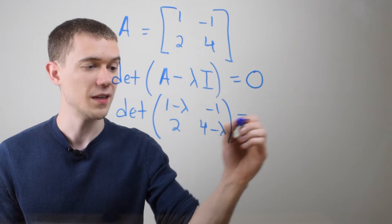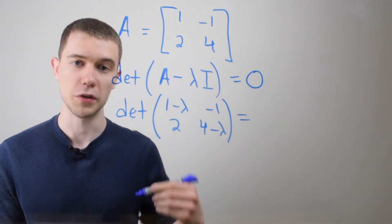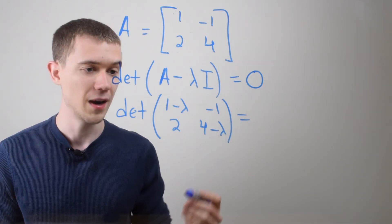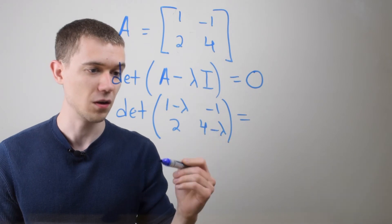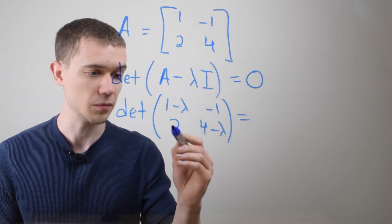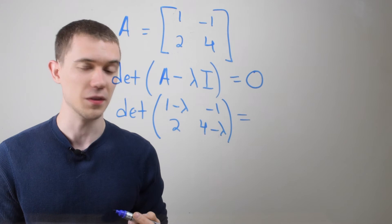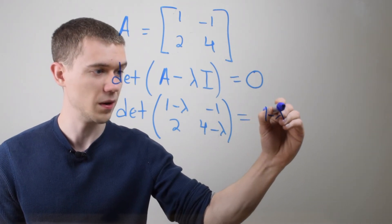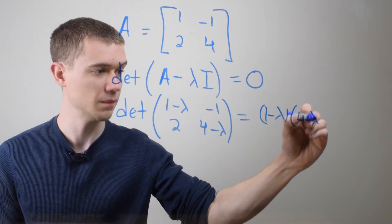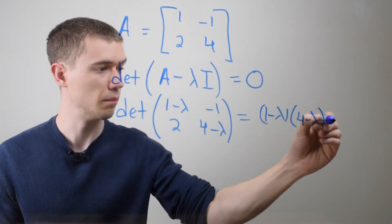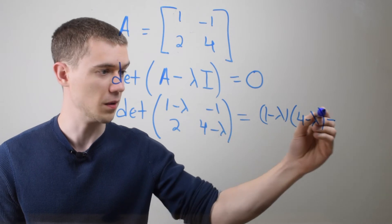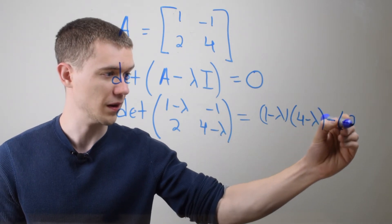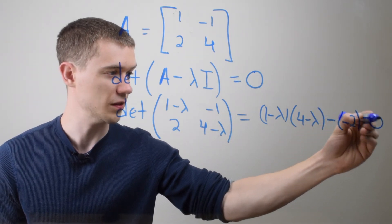So if I take the determinant of this matrix, remember the determinant of a 2x2, I multiply the elements along the first diagonal and then I subtract multiplying the elements on the other diagonal. So this looks like (1 - λ)(4 - λ) minus 2 times -1 minus 2 and I'm setting this equal to zero.